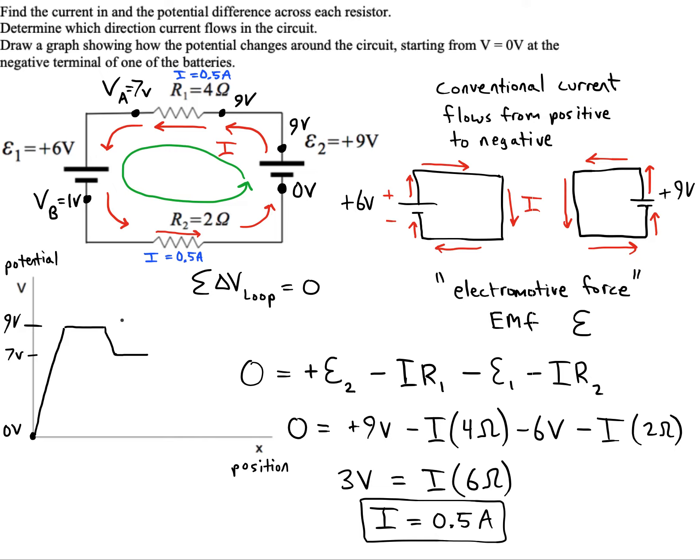Now the battery is going to make us lose 6 volts because we're going backwards through it, and that's going to take us all the way down to 1 volt. Once we hit that resistor, we'll lose the rest of the potential, returning us to 0 volts. So both the equation and the potential versus position graph are supposed to tell the same story of what happened as we go around the loop in the circuit.